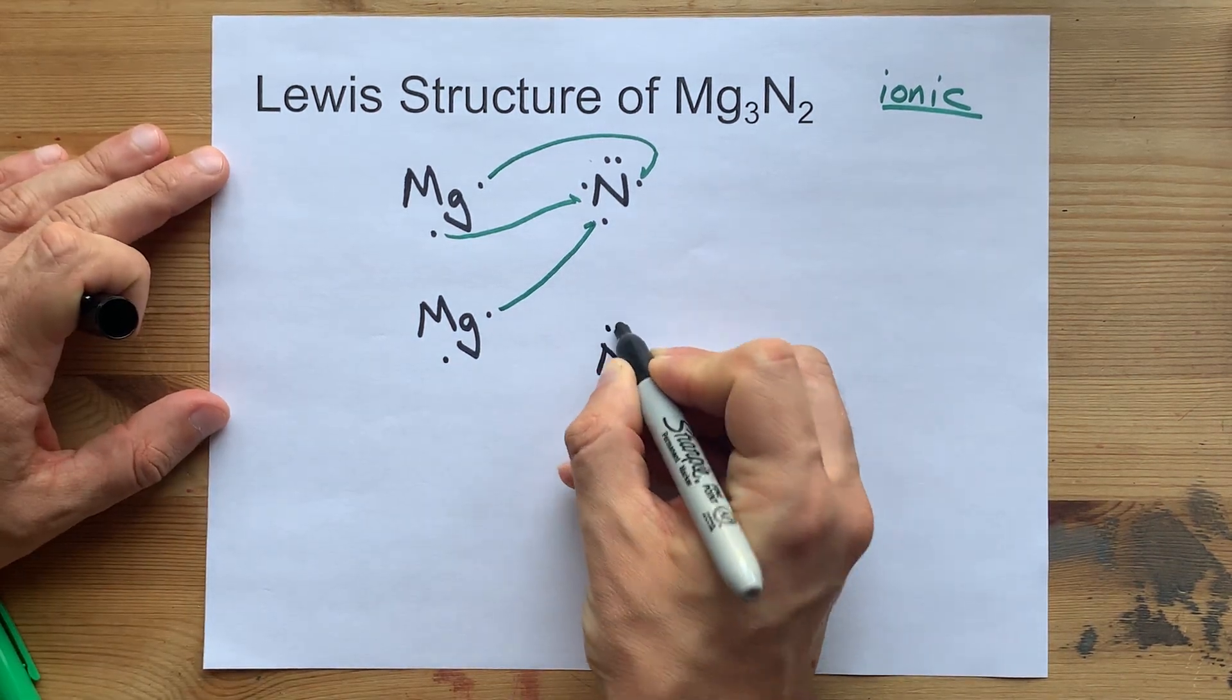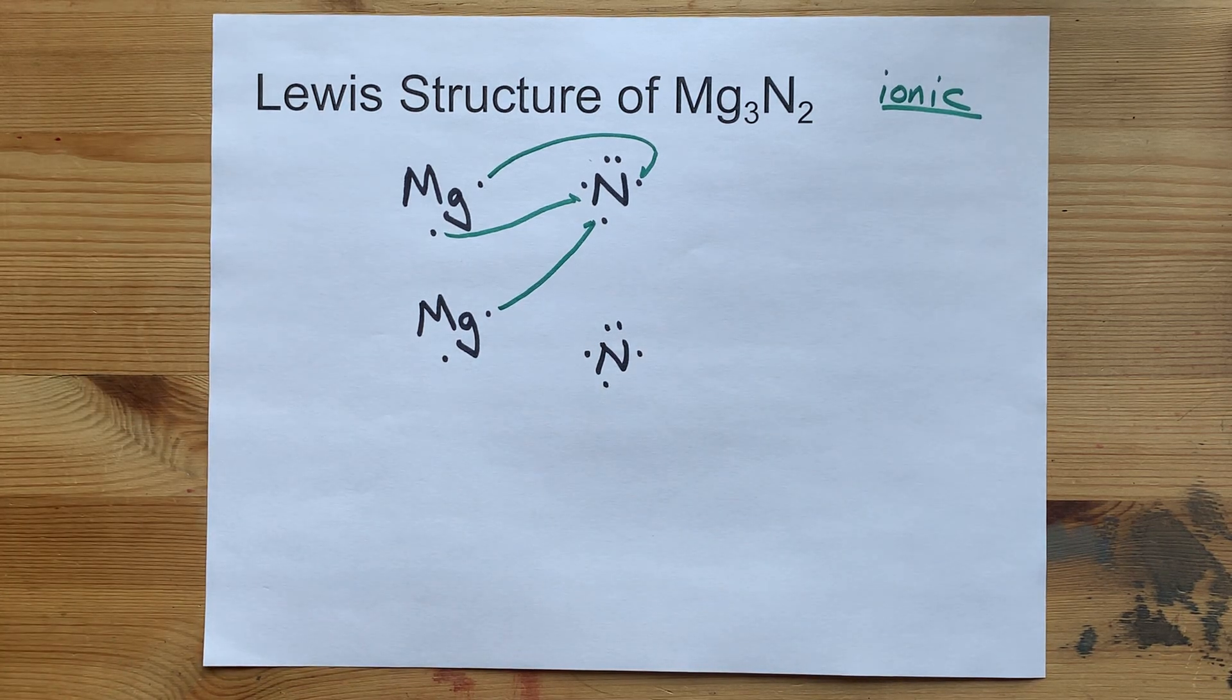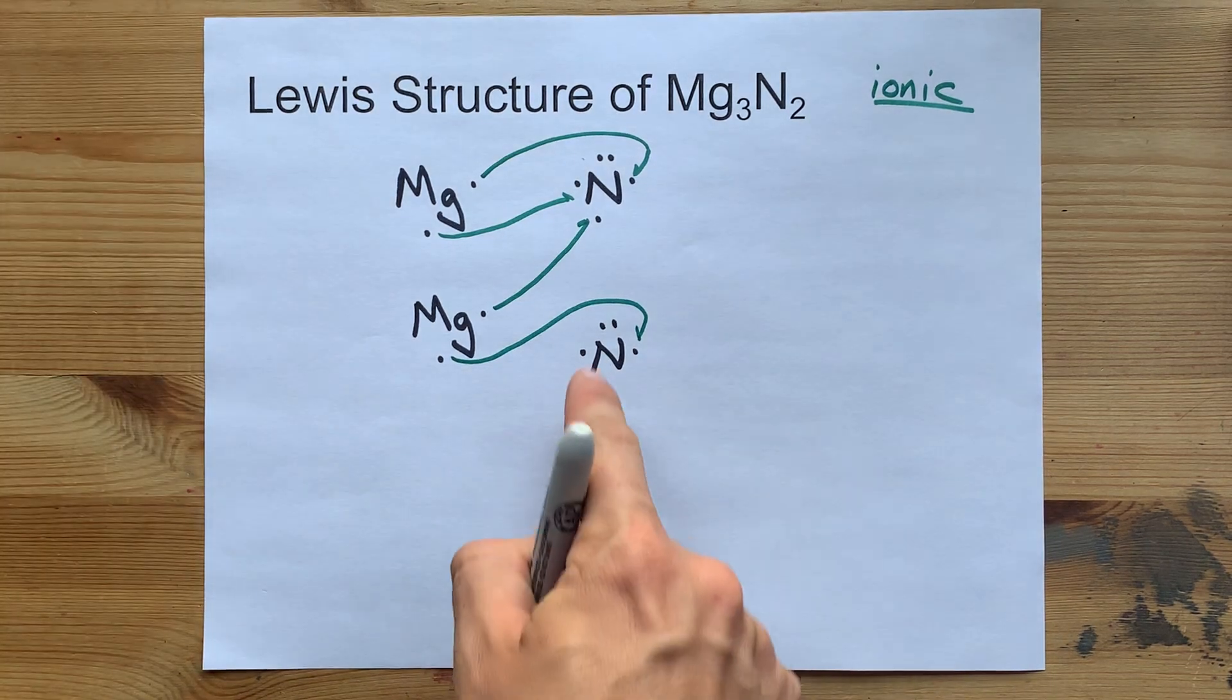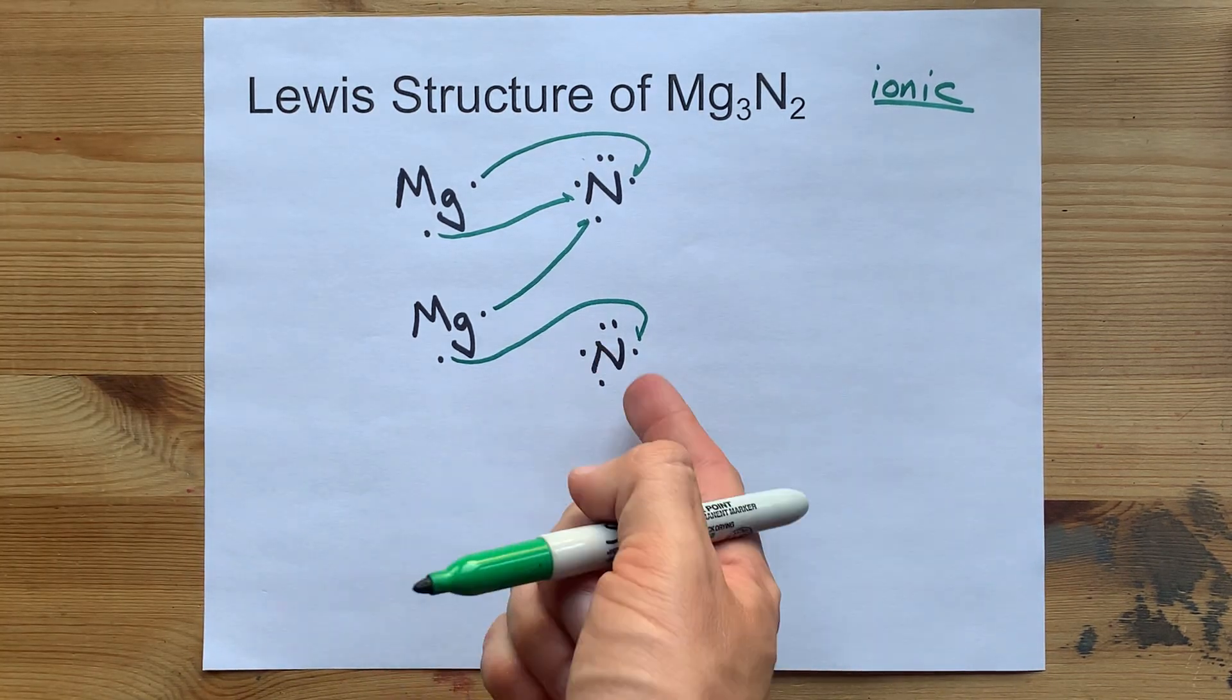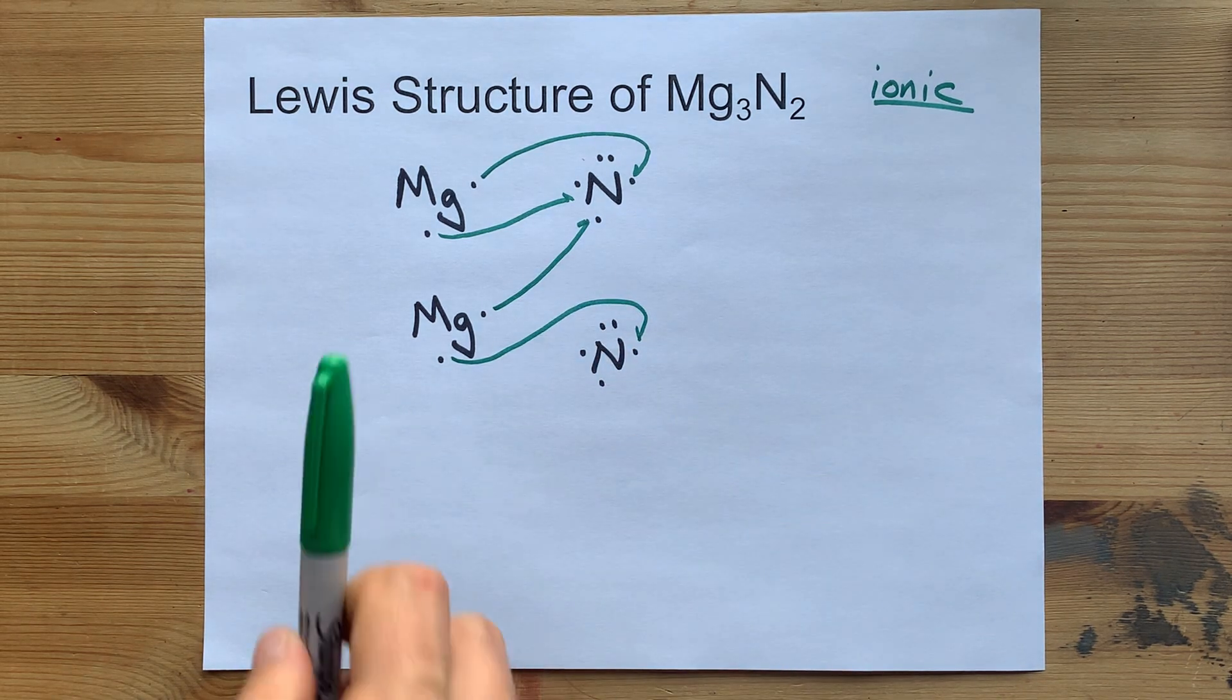Bring in another nitrogen with its 5 valence electrons, and give that electron away. Nitrogen, this one, still needs more. Brought 5, gained 1, it's only at 6.